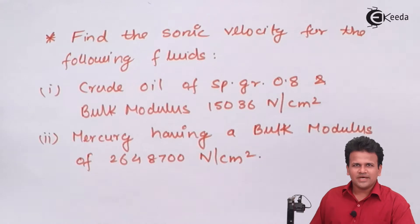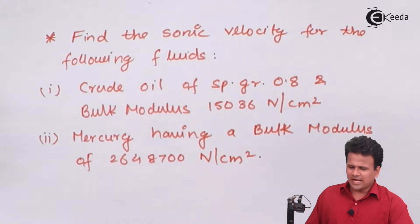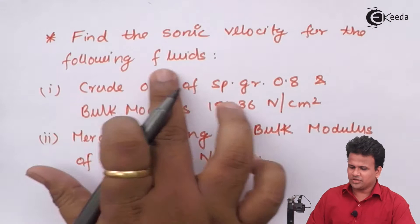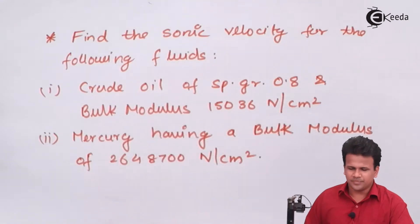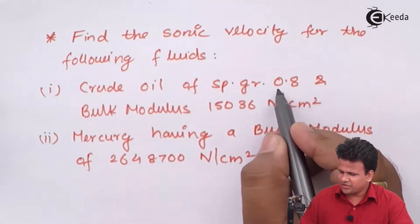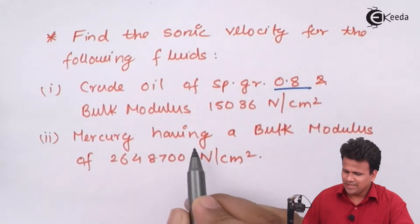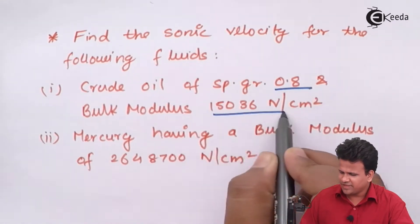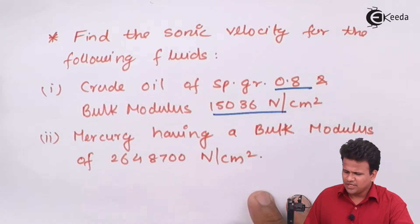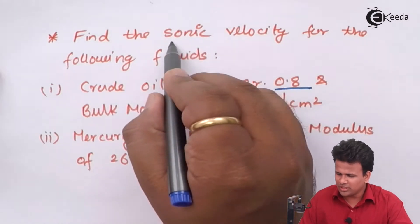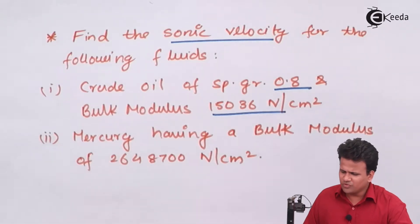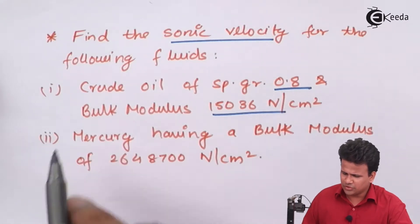We have a question which states: find the value of sonic velocity for the following fluids. The crude oil has a specific gravity of 0.8 and a bulk modulus of 15036 N/cm². We have to calculate the sonic velocity — that is, the velocity of sound — for two fluids: first is crude oil,